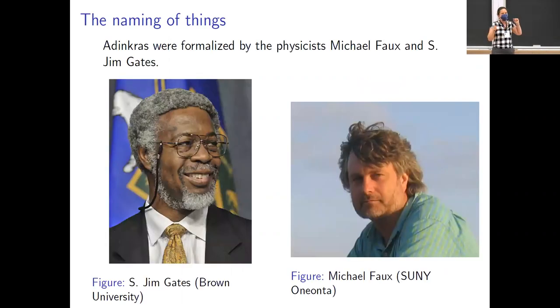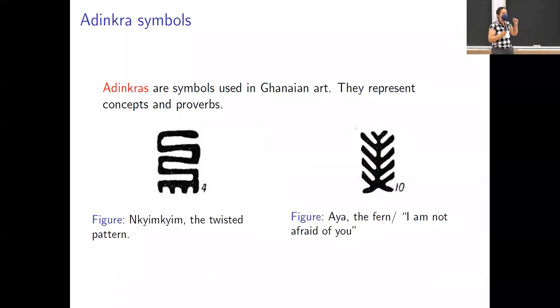Adinkras were formalized as mathematical objects by Michael Fox and Jim Gates. And they take their name from an older symbol that are symbols used in artwork from Ghana. These are symbols that can very compactly convey a large amount of information, a big idea. And so Gates and Fox said this is exactly what we're doing. We're somehow cramming all of this information into a pretty graphical object. So we should call them Adinkras, kind of in honor of this older art form.